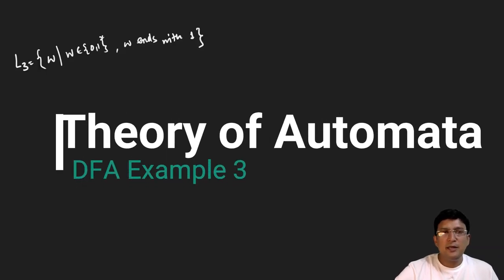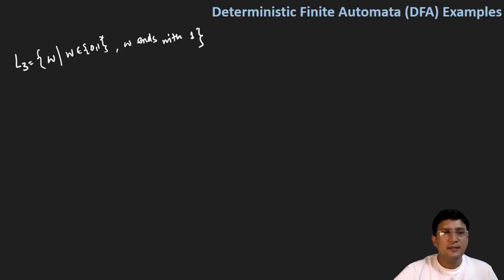Let's take one more example and understand how the DFA will be formed for this language. So this says that w where w is element of zero one star. This is a new kind of representation that we have written here in this language.